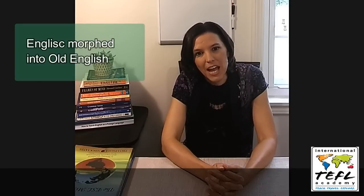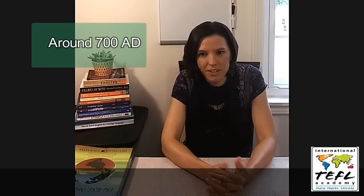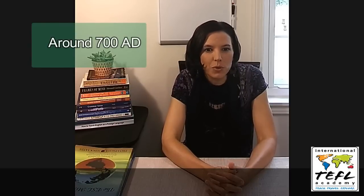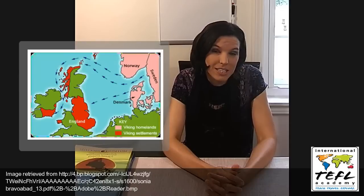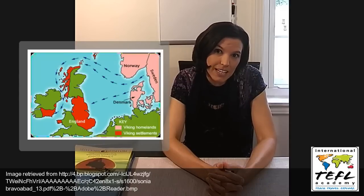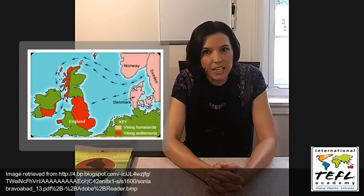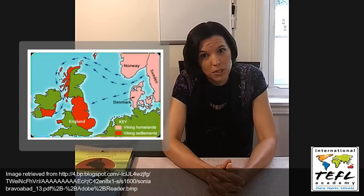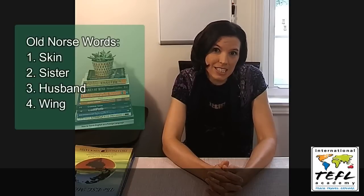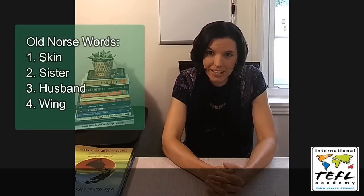Time moves on and English evolves. Step into around the 700s. The Vikings, or Norsemen, from Denmark, Norway, and Sweden invade England. The Viking language is Old Norse, which is similar to modern-day Icelandic. And Old Norse words like skin, sister, husband, and wing enter Old English. And Old English evolves some more.